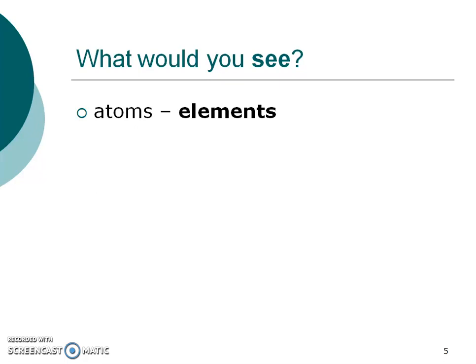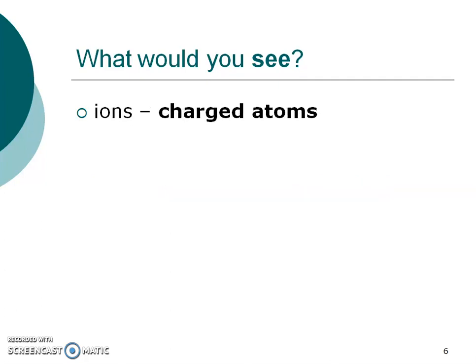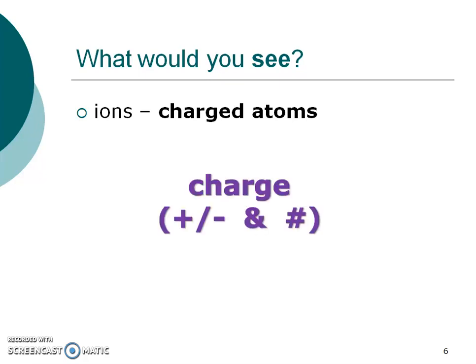So what would we actually see? Hopefully you've seen that periodic table quite often and know that an element only has one capital letter. So if I see an element and the formula has one capital letter, I'm really referring to atoms. However, if I'm referring to ions, I'm really going to be referring to something that's charged. A charged atom or a charged polyatomic ion — ions can be either one element with a charge or multiple atoms together with a charge. Either way, an ion is something that has a charge, and I'm going to notice a positive or negative and then a number associated with it.